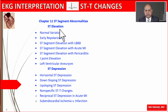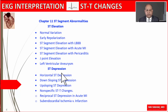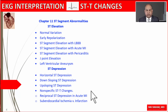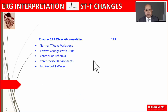In this chapter we will talk about the normal variations of the ST segment, early repolarization, and ST changes seen in various conditions such as left bundle branch block, acute myocardial infarction, pericarditis, J-point elevation, and left ventricular aneurysm. We'll also cover ST depression in various forms: horizontal, down-sloping, up-sloping, and non-specific ST-T changes.